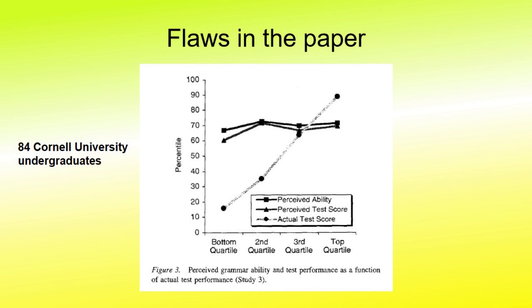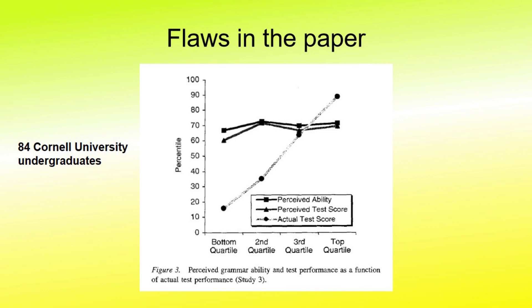This is a little better with the participants being 84 Cornell University undergraduate students. But this is still not a representative sample. Also, being based on an English grammar test does show a degree of objectivity in the testing. The pattern in this one is actually rather flat in both parameters.